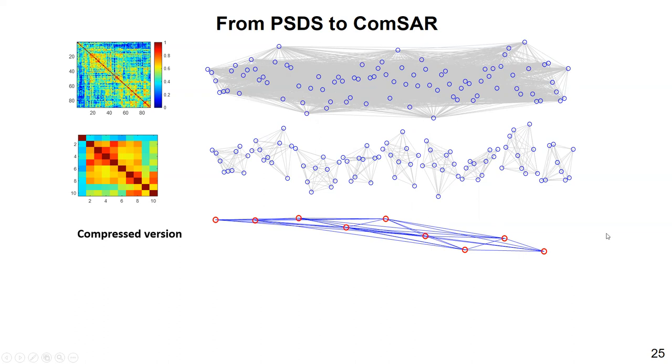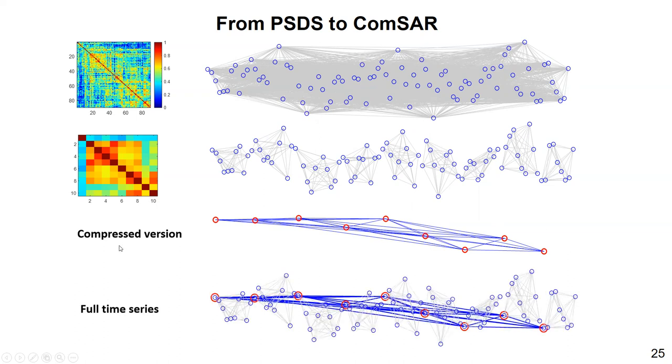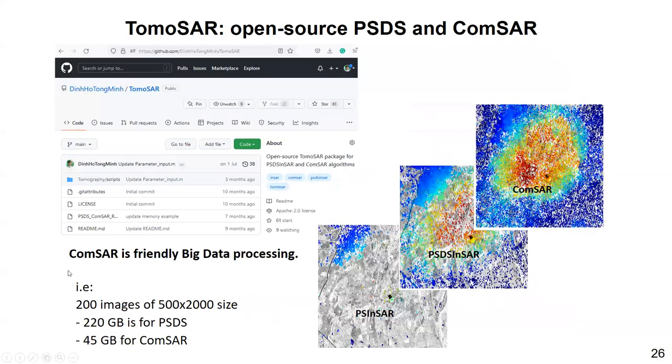And in this way, whenever a new acquisition comes, a new acquisition is available, we do not need to recalculate all again. And such compressed versions can be used at a datum to link the history of the mini-stacks with the recent acquisition. And therefore, it is able to reconstruct the complex phase time series. Regarding the memory requirement with 200 images of 500 by 2,000 size like this one, 220 GB is for the combination technique, but only 45 GB for the COMSA. Therefore, COMSA is much more friendly to big data processing.